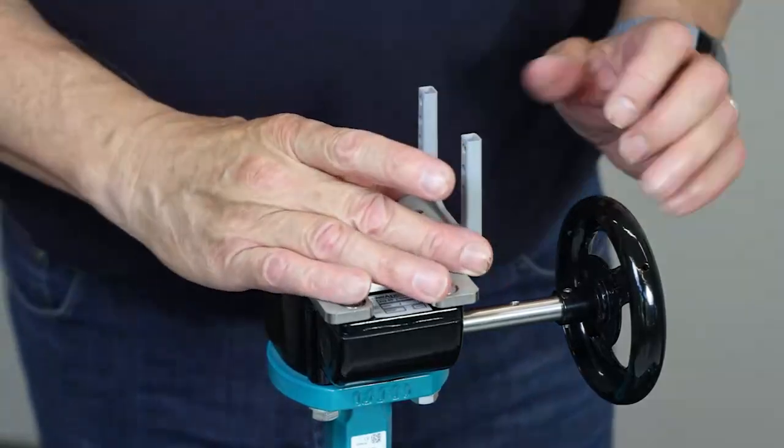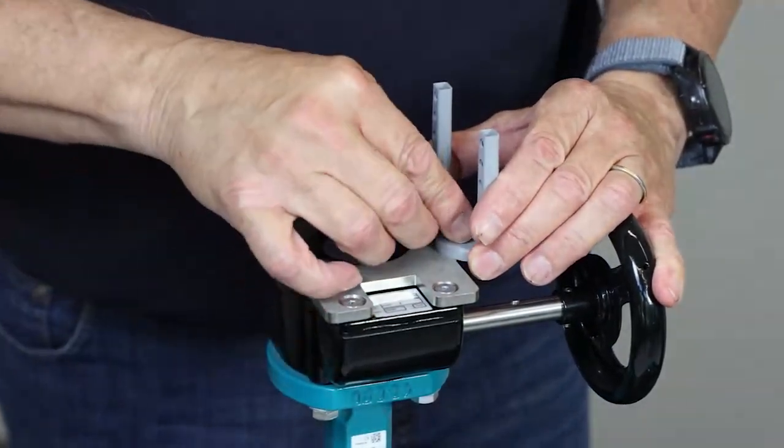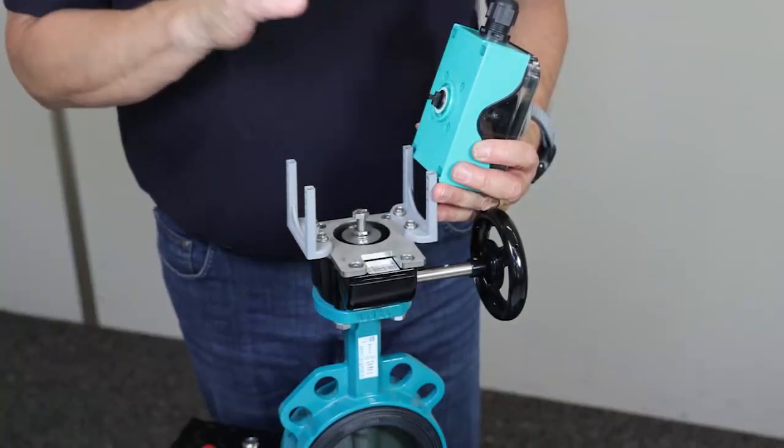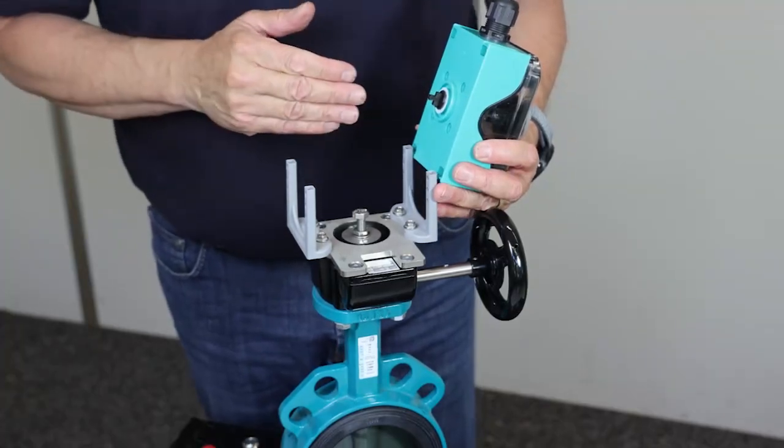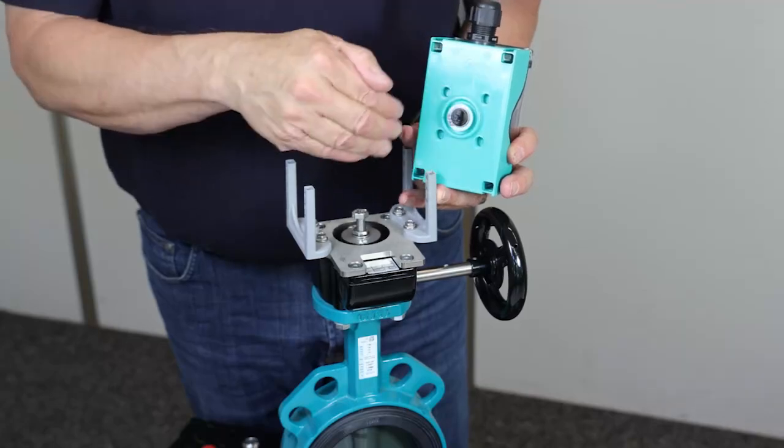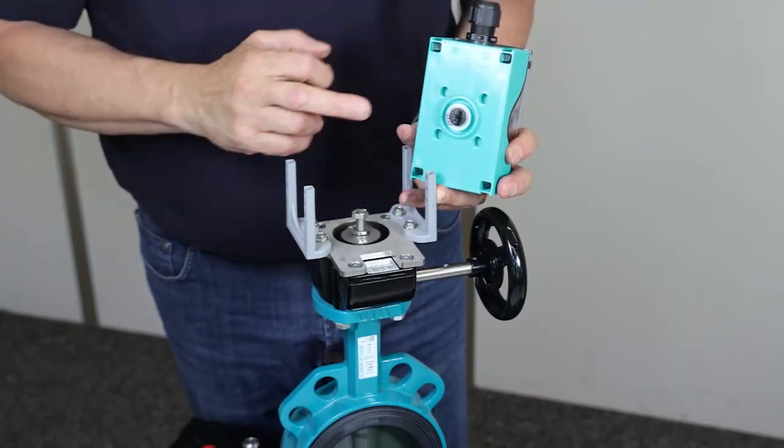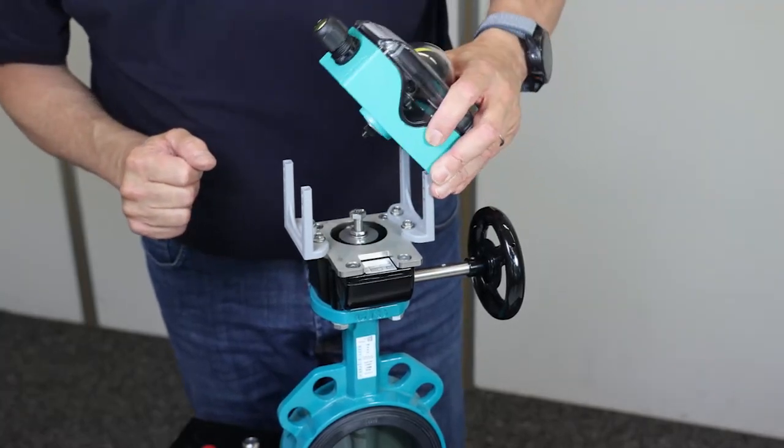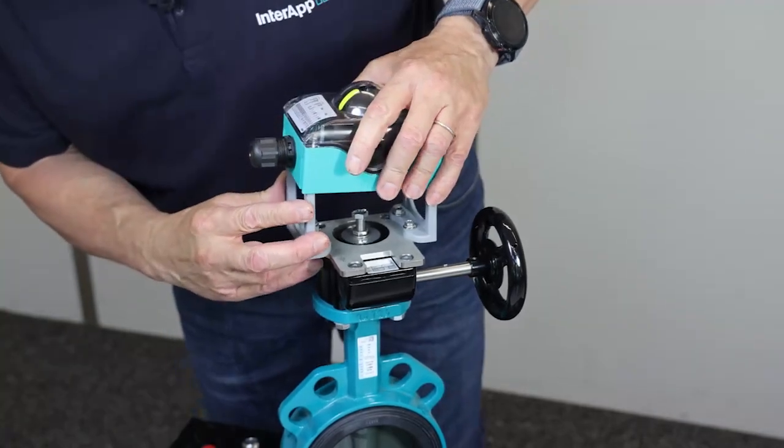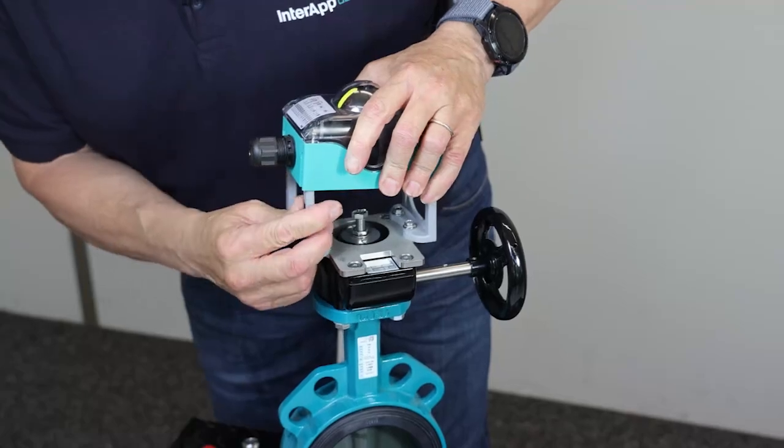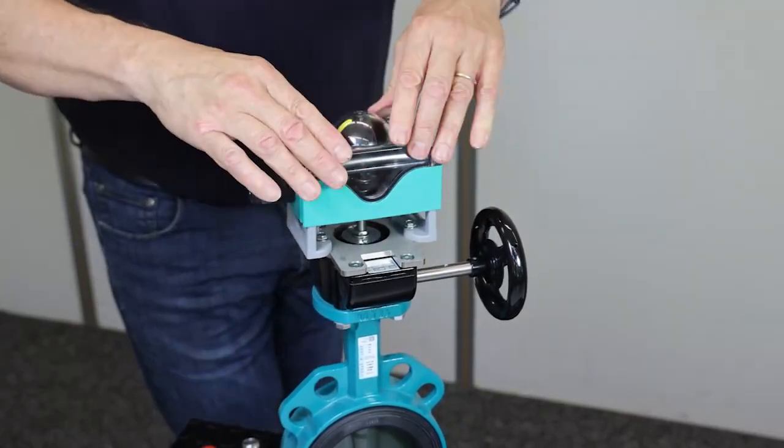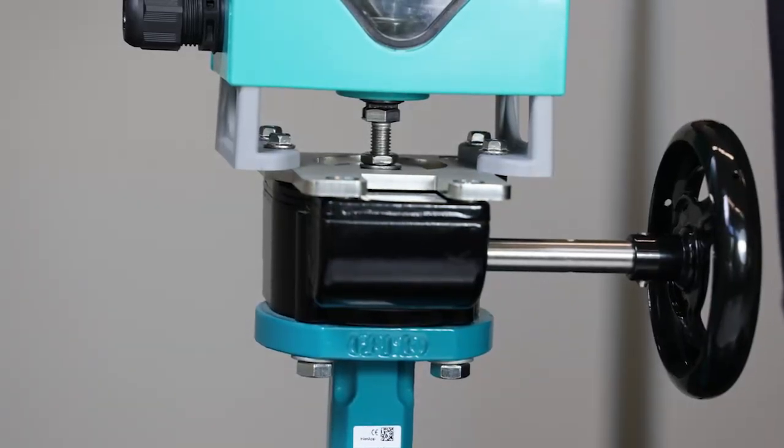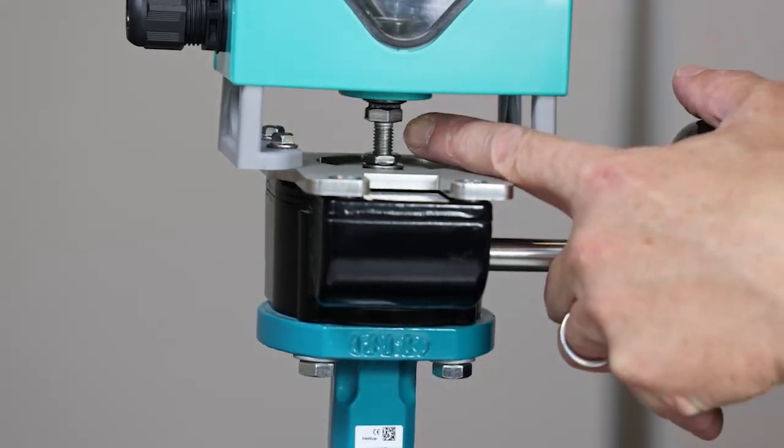As next we mount the legs of the limit switch box. As next we mount now the box on the mounting parts. Important is to check that the slot of the screw corresponds to the driver of the limit switch box. You need as well to check once the box is down if the driver is well in the slot.